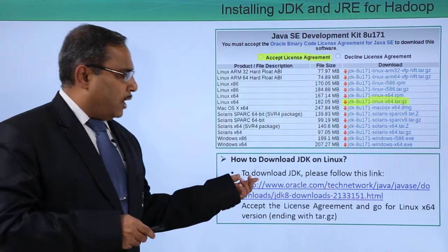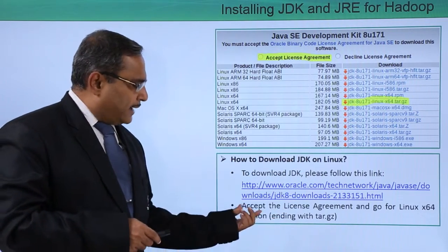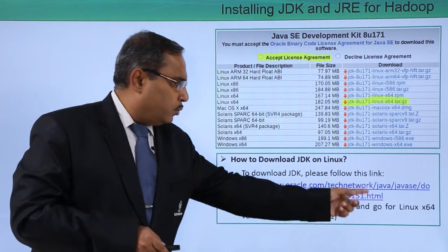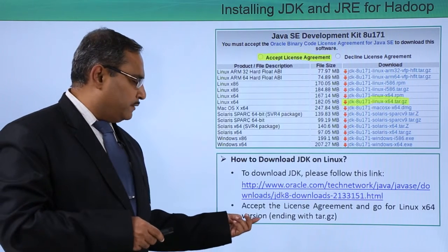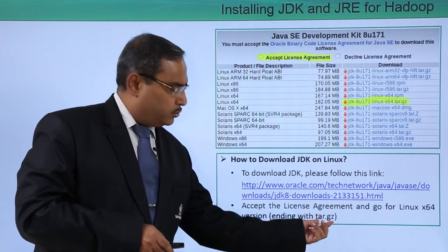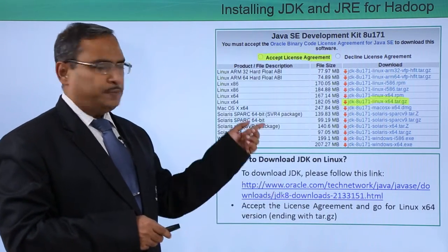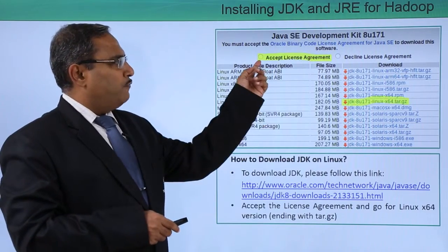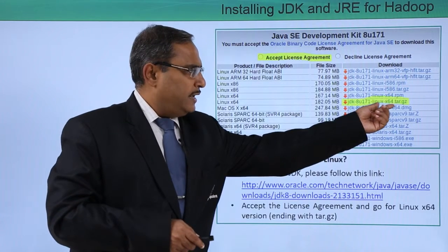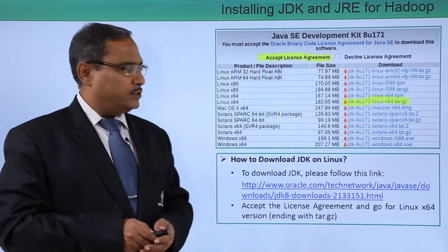To download JDK, please follow the link provided. Accept the license agreement option and then go for the Linux 64-bit version ending with tar.gz. After going to this particular link, this page will come up. We shall go for accept license agreement, then select the respective Linux x64 version with tar.gz as the file extension.